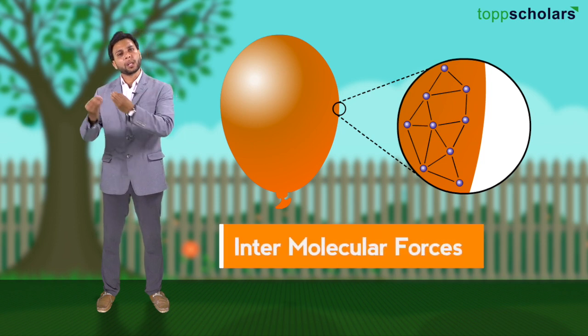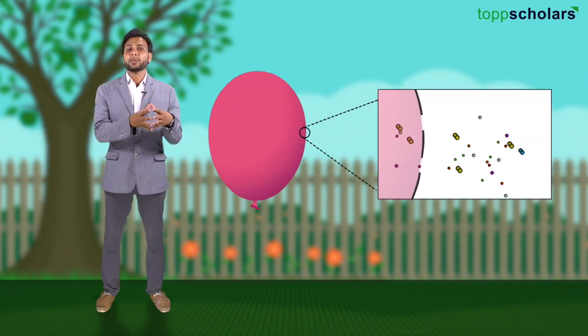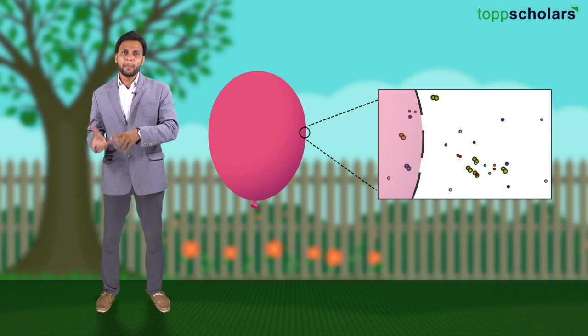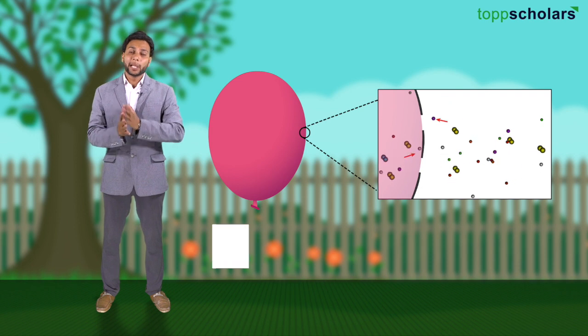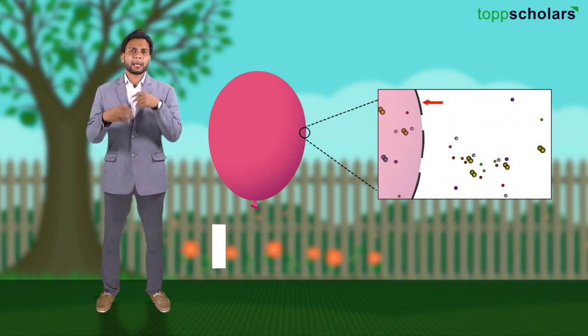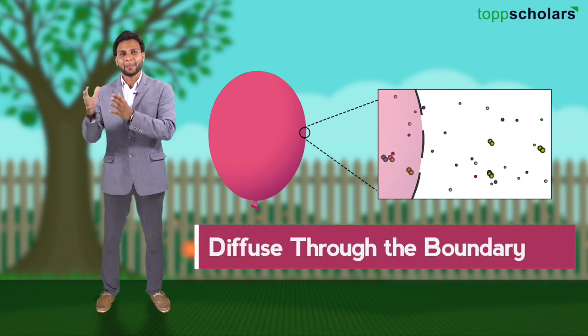These molecules are bound together with intermolecular forces. Air is a mixture of many molecules which are moving randomly. These molecules come in contact with the surface of the balloon both from outside and from inside — they collide with the membrane of the balloon.